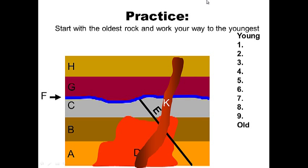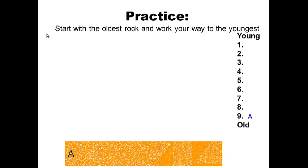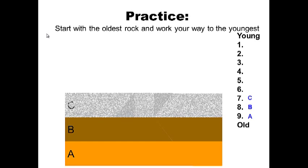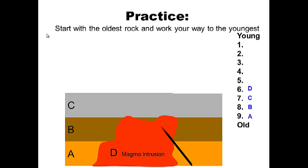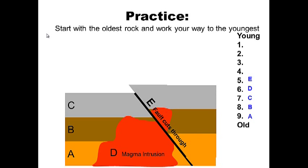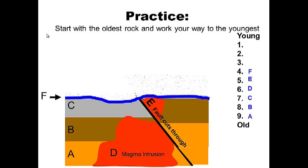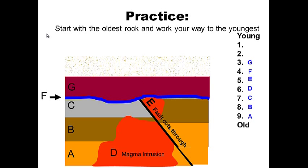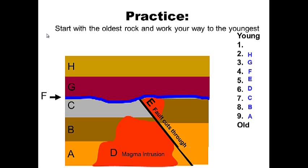One more practice diagram. Notice there's one more thing cutting through everything — the law of cross-cutting relationships. Starting from the oldest, work to the youngest. The answers: layer A formed first, then B, then C. Magma cuts through as D. Then the fault cuts through everything as E. Then weathering and erosion F creates an unconformity — a layer is missing. Then new layer G is deposited, then H. Finally, another magma intrusion cuts through everything, and we have K as the youngest.